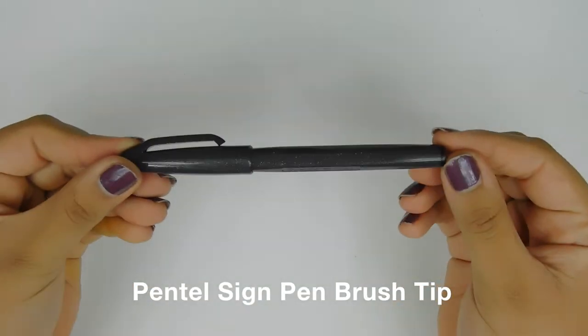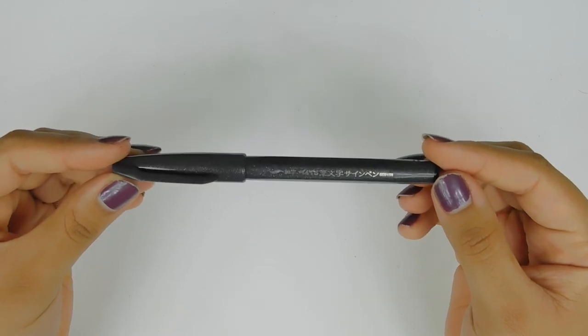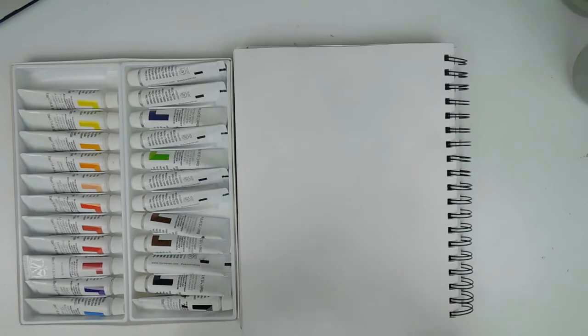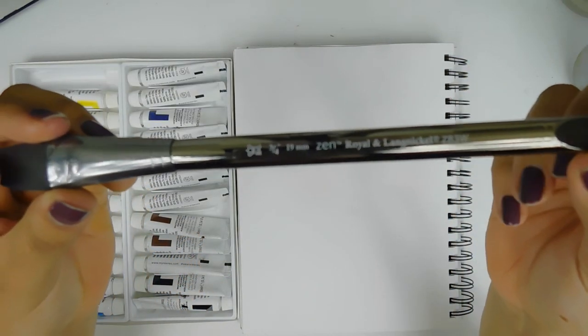This is a heavy duty X-Acto knife type of thing because I had a cardboard project and this is a brush pen. I can't remember the name of the company right now, but I'll put that up on the screen. And yes, so we're jumping right into the watercolor swatches.